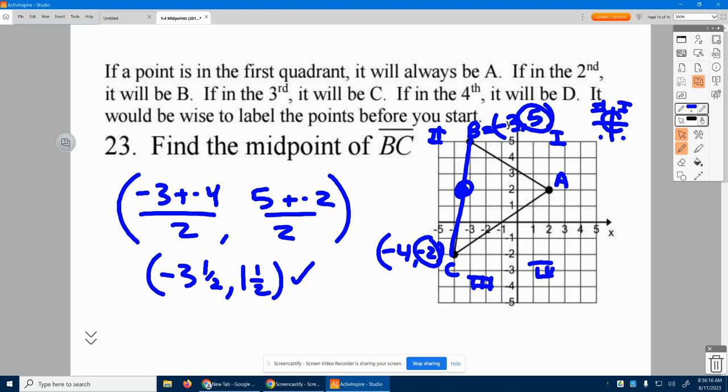There's our midpoint. Let's look over negative three and a half, which would be about right here, up one and a half, about right here. So that point right there is where the middle of that line segment BC happens to be.